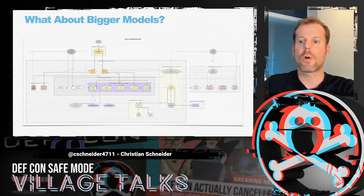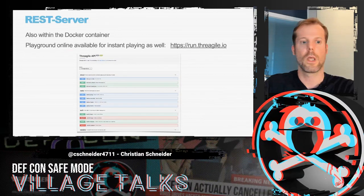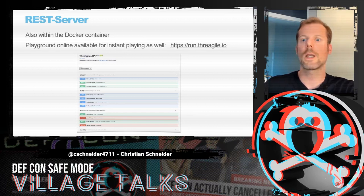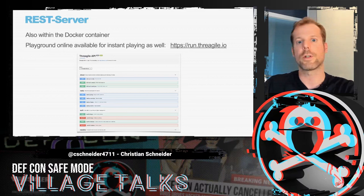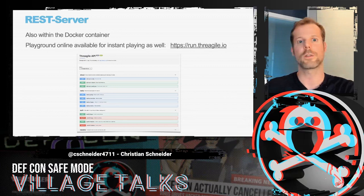Even bigger models work well — something confirmed during beta testing of ThreadGile. A REST server is also available inside ThreadGile in the Docker container, exposing a port that lets you use ThreadGile like a REST API. You can send in the YAML file and get back a zip file with all generated artifacts. In the next version, you can create a model on the server side in an encrypted fashion, then add data assets, technical assets, communication links, apply risk tracking, and import or export the model file.